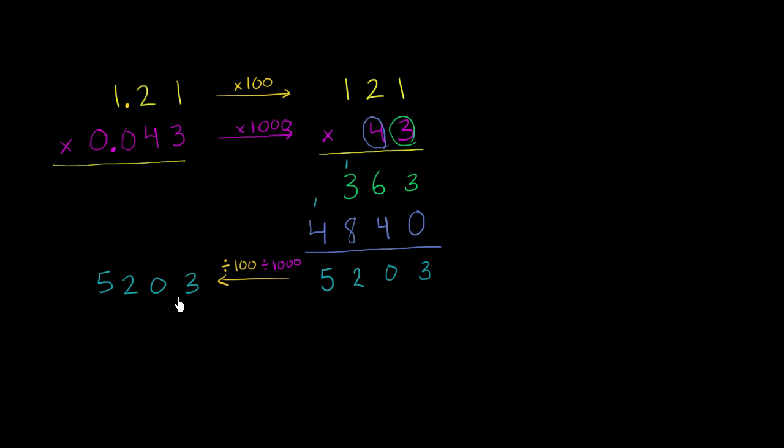let's see divide by 10, divide by 100, and then we want to divide by another 1,000. So divide by 10, divide by 100, divide by 1,000. So our decimal point is going to go right over there. And we're done. 1.21 times 0.043 is 0.05203.